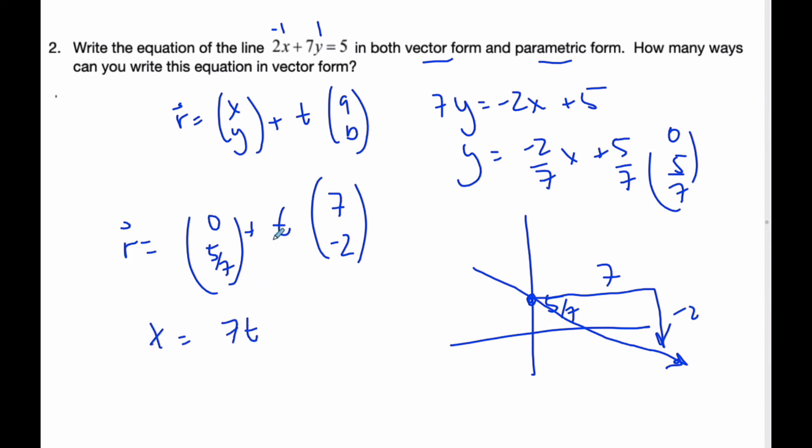And hence my parametric equation will be just 7t for the x. And y is equal to 5 sevenths plus a negative 2, so just negative 2t.